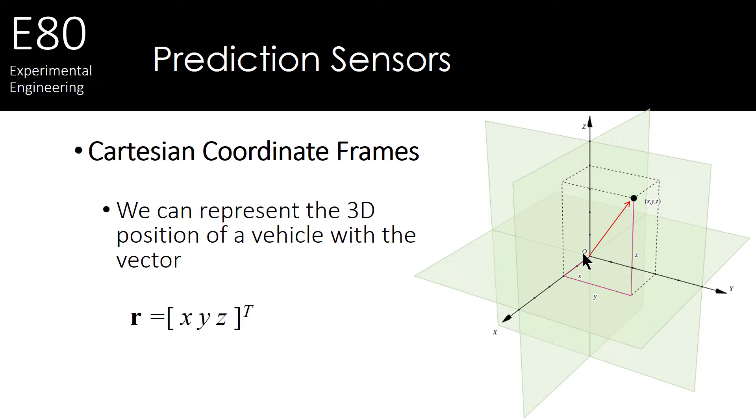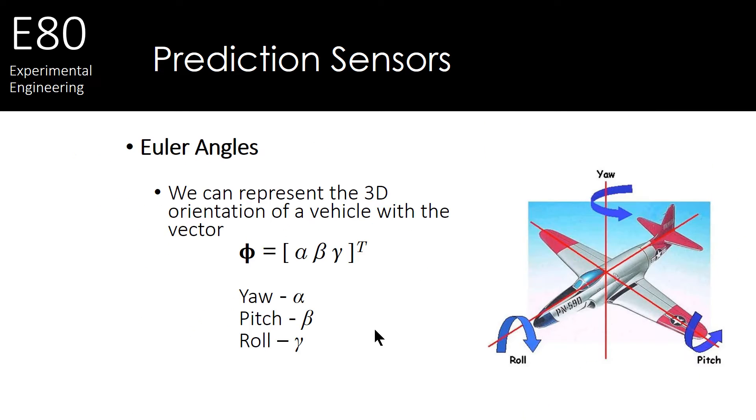Well, we're going to start by using coordinate frames. First, we'll note that we can represent the position of a robot, or we'll say vehicle, to be more general. In the 3D sense, with some vector, let's call it R, that's got an XYZ component using a Cartesian coordinate frame. You're probably familiar with such Cartesian coordinate frames.